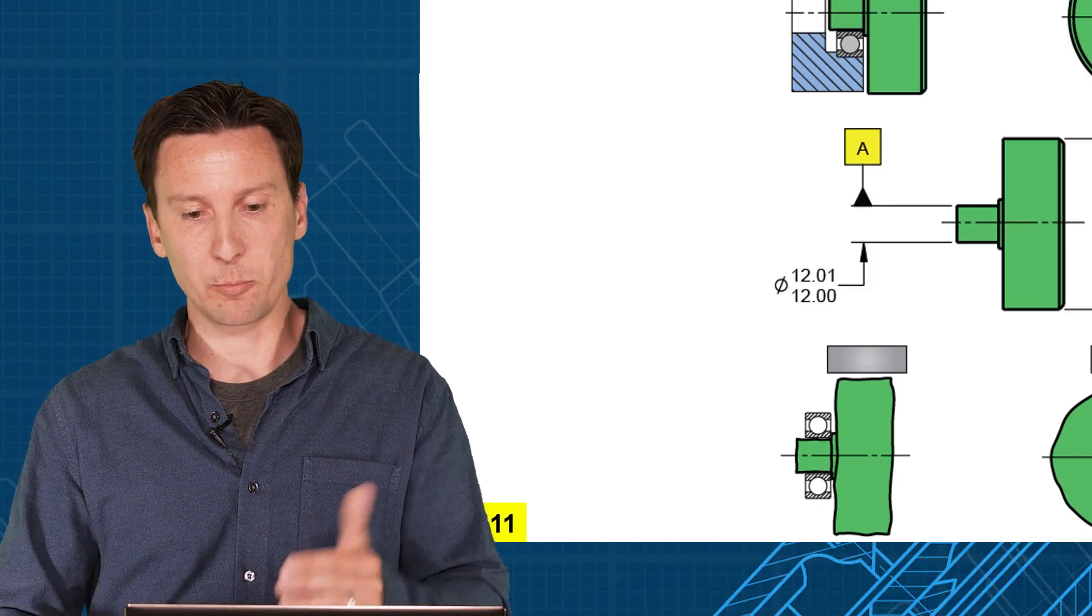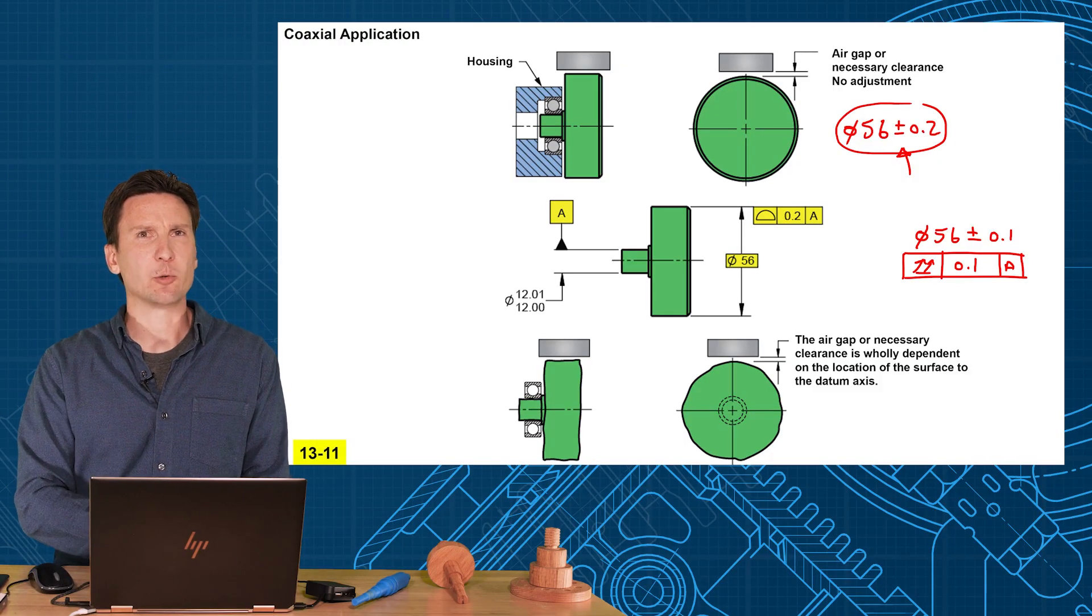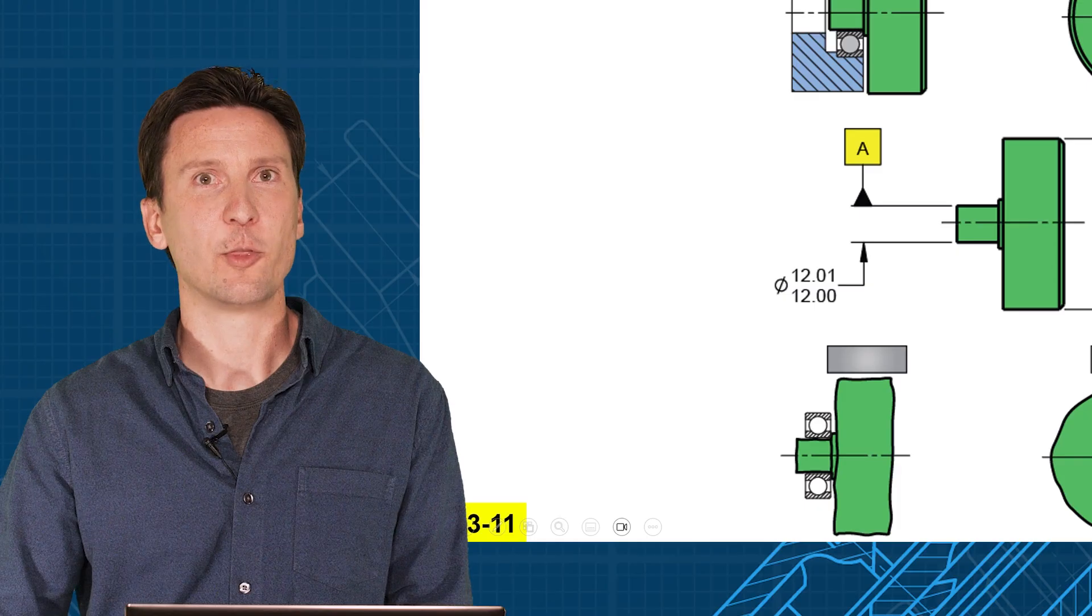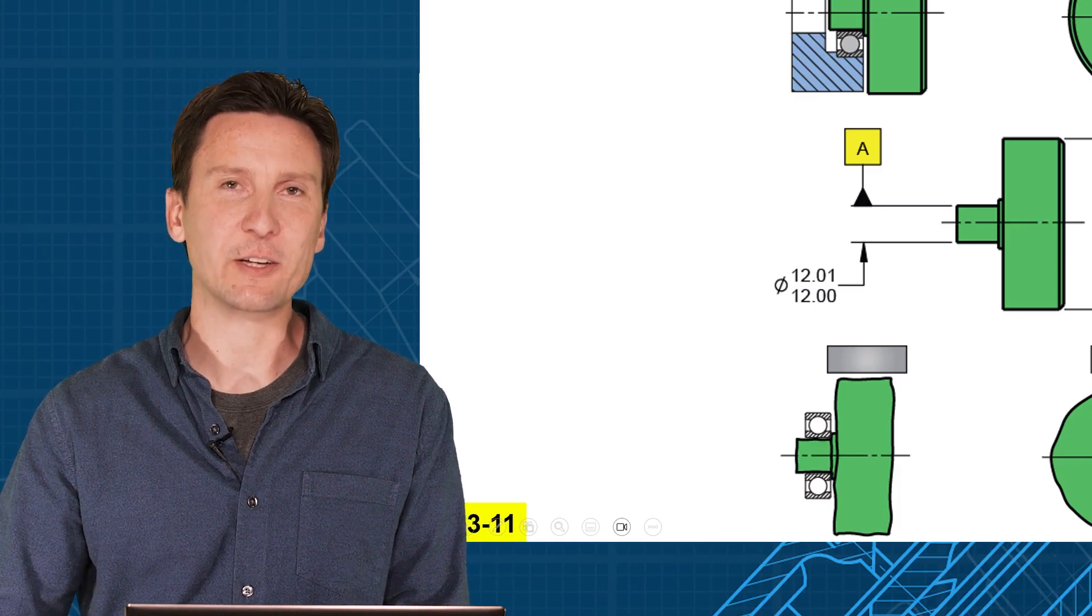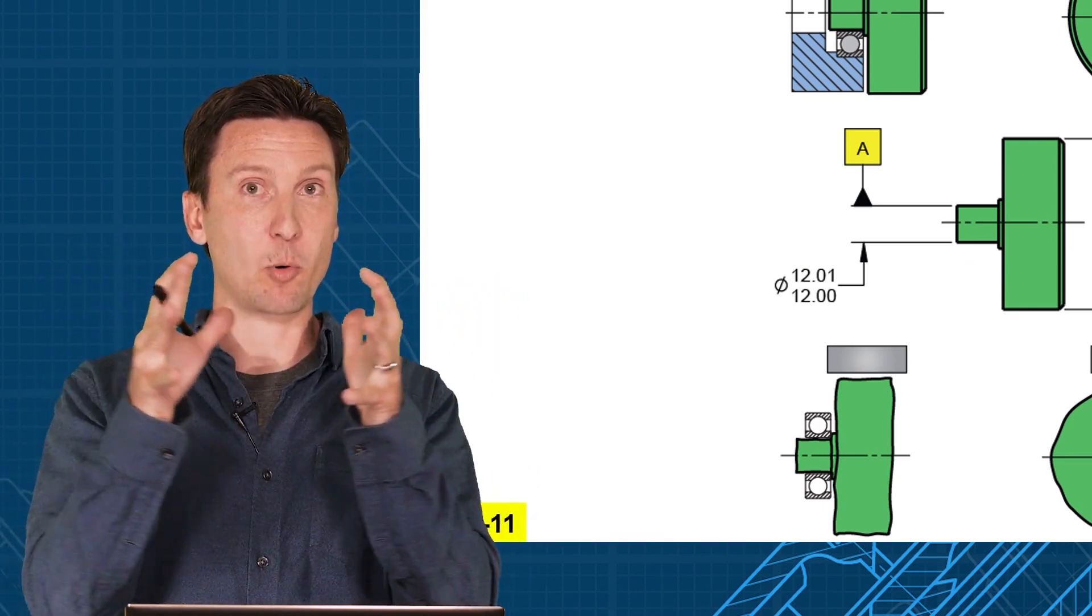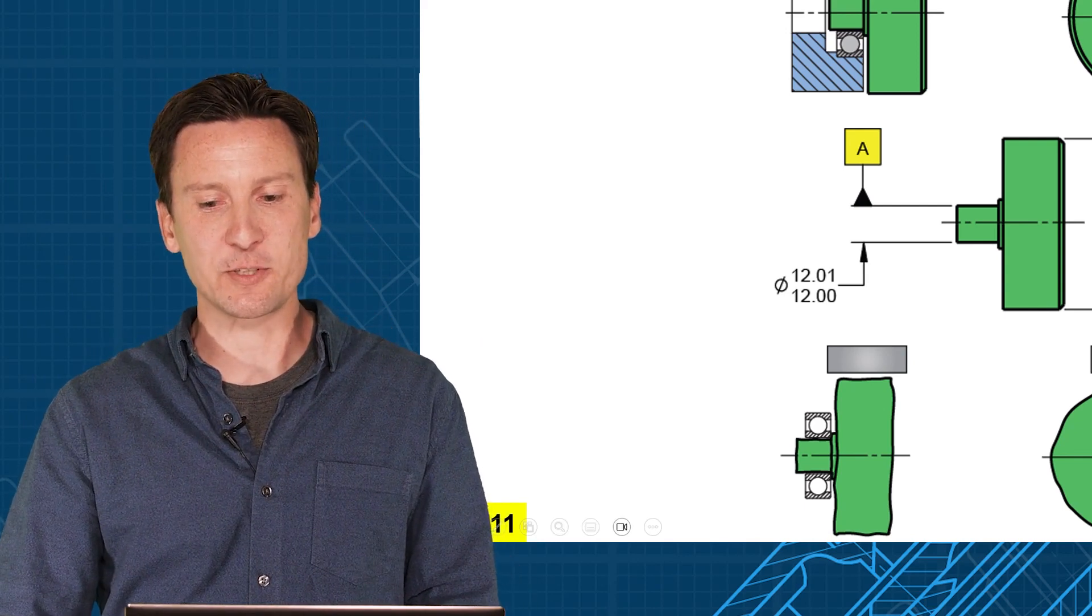And that would give you the same boundaries as what we got with profile. So, yes, you could do with the yellow profile or the red runout. Now, which one do you think manufacturing would rather build to? Would manufacturing rather build to the profile or to the runout? The profile. The profile gives you more size tolerance.